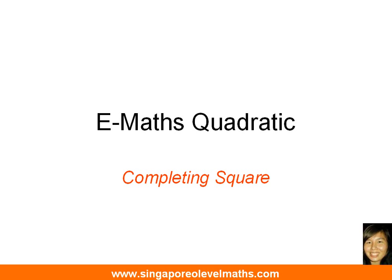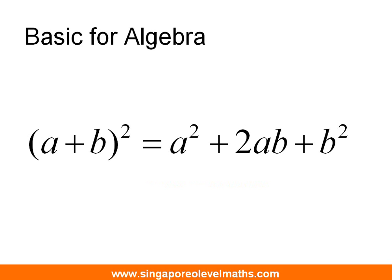Before I go into the steps, I would like to share with you one of the basics of algebra. What you see in front of you is: (a + b)² equals a² plus 2ab plus b². This is the principle that is behind completing the square.